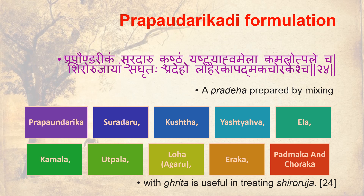A Pradeha prepared by mixing Propoundary Gadi Suradharu Kushta, Yeshti Ahuam, Ela Kamala, Utpala, Lauha, Eeraka, Patmaka and Choraka with Grada is useful in treating Shiro Ruja.